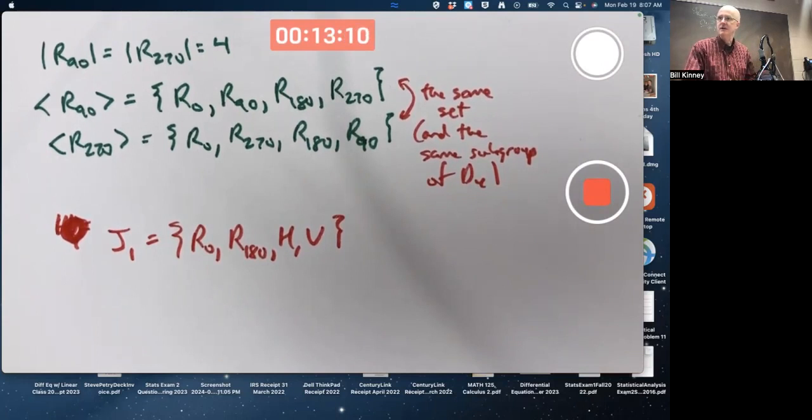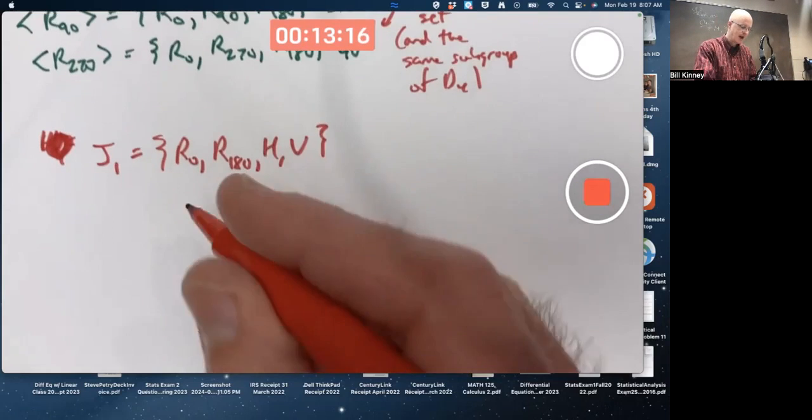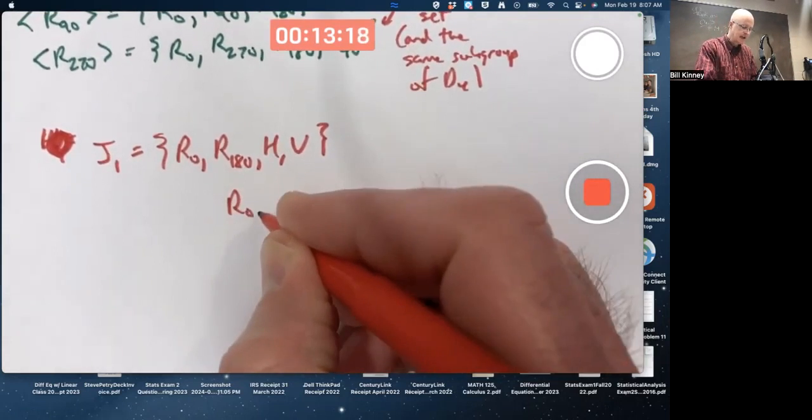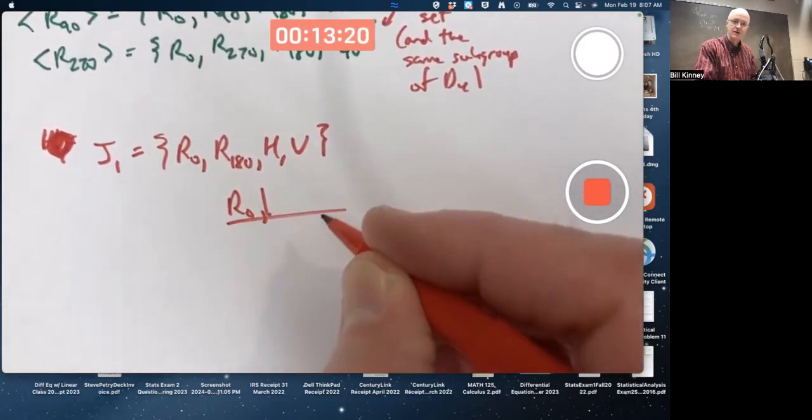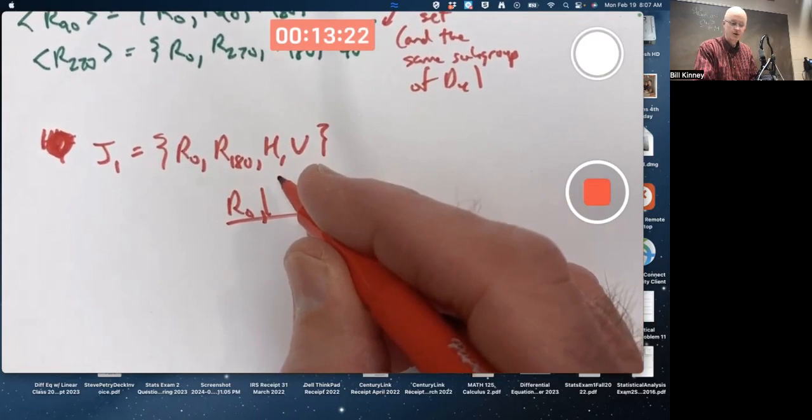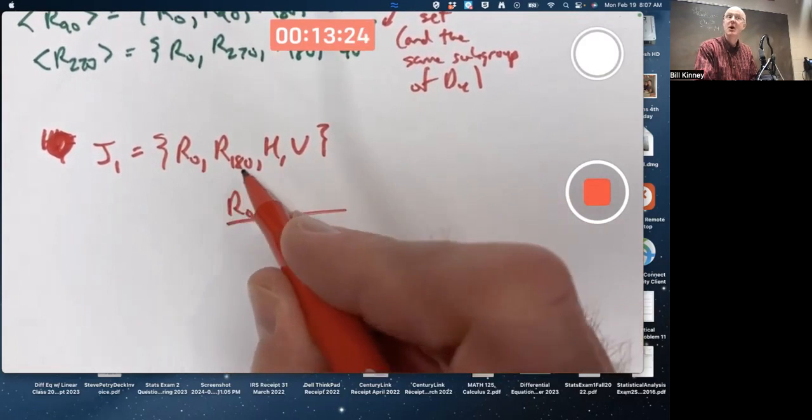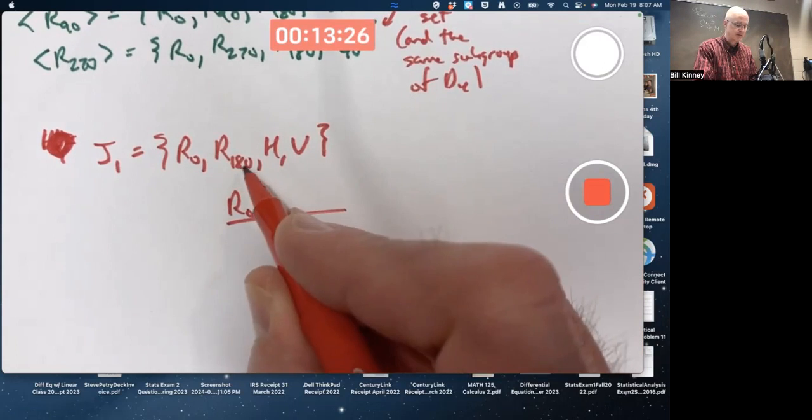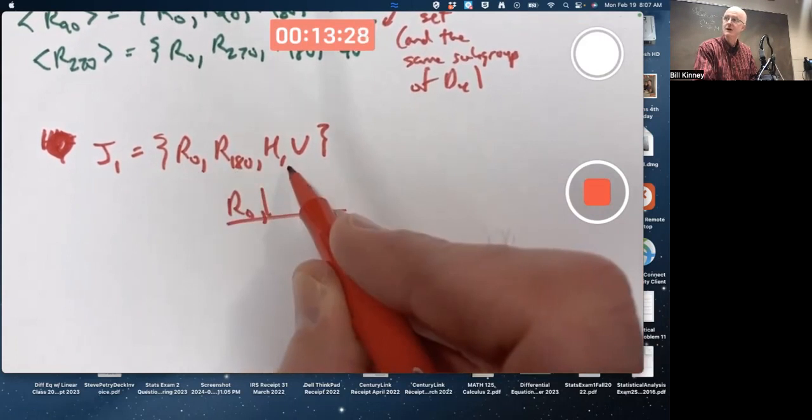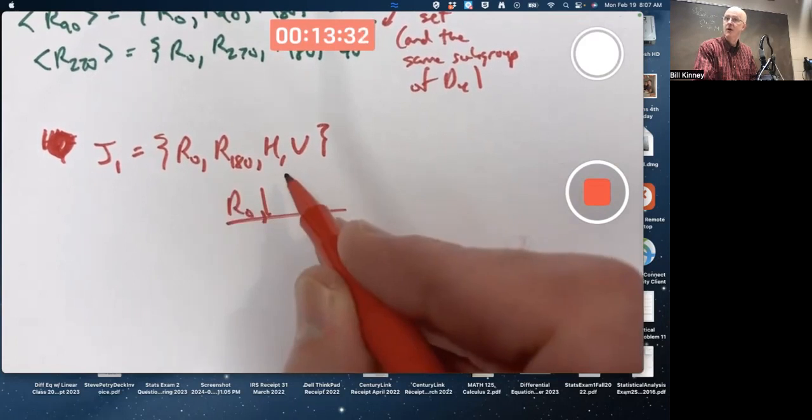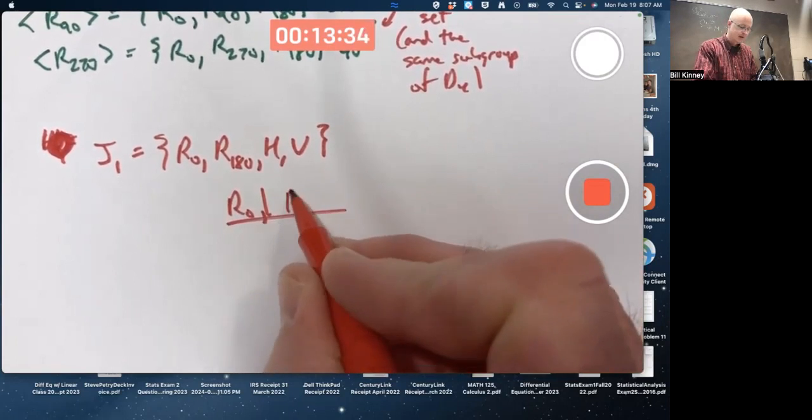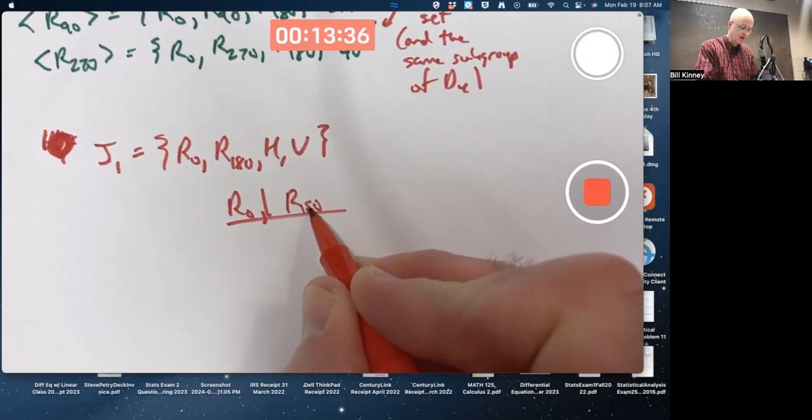Initially, looking at that Cayley table, seems like maybe this would be closed. We haven't proved that, but maybe it would be closed. Let's go ahead and try to make a full Cayley table. Each element's inverse is in here. That's for sure. Because each element is its own inverse. Each element besides the identity has order 2. The identity has order 1. They're all their own inverses. The only thing questionable is closure.